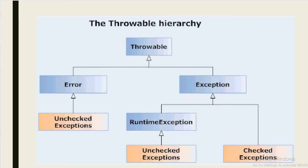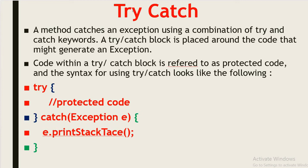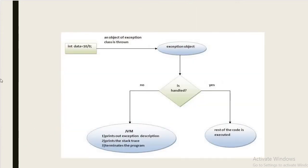We can use a try-catch block to handle exceptions in Java. A method catches an exception using a combination of the try and catch keywords. A try-catch block is placed around the code that might generate an exception, and code within a try-catch block is referred to as protected code. Inside the try block we write the code where we are expecting an exception, and inside the catch block we handle the exception and perform further operations.